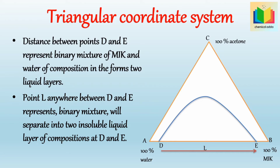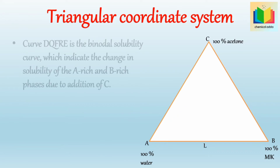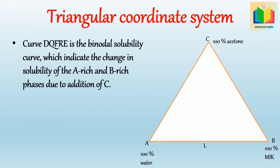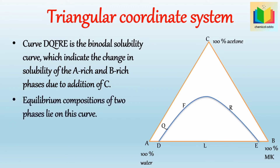In this triangular diagram, the curve DQFRE is the binodal solubility curve, which indicates the change in solubility of the A-rich and B-rich phases due to the addition of solvent C. The equilibrium compositions of these two phases — that is, the extract and raffinate phases — lie on this curve.